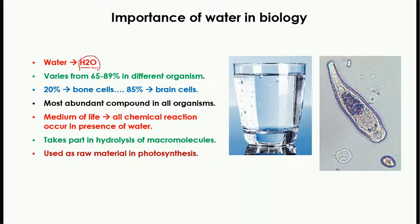The percentage of water in different organisms varies. Generally, 65 to 89 percent of the body of different organisms is made up of water. In the human body, 20 percent water is present in the bone cells and 85 percent water is present in the brain cells.